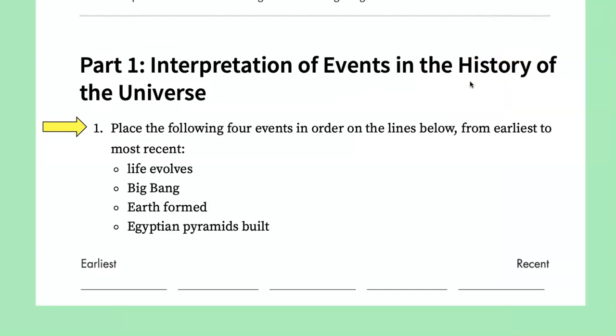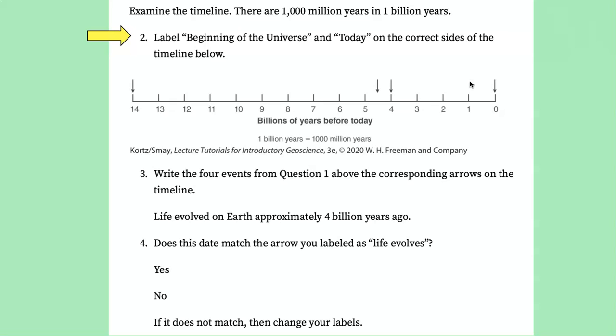So the first part says place the following four events in order on the line below. I don't know why they have five lines, but you have the Big Bang is the first thing that happened. That was the beginning of the Universe. Earth formed, life evolved, and the Egyptians built the pyramids. This is what we call relative age. We don't know the exact number of the age yet, but in relative time, in terms of which one happened first, second, third, this is a relative order.